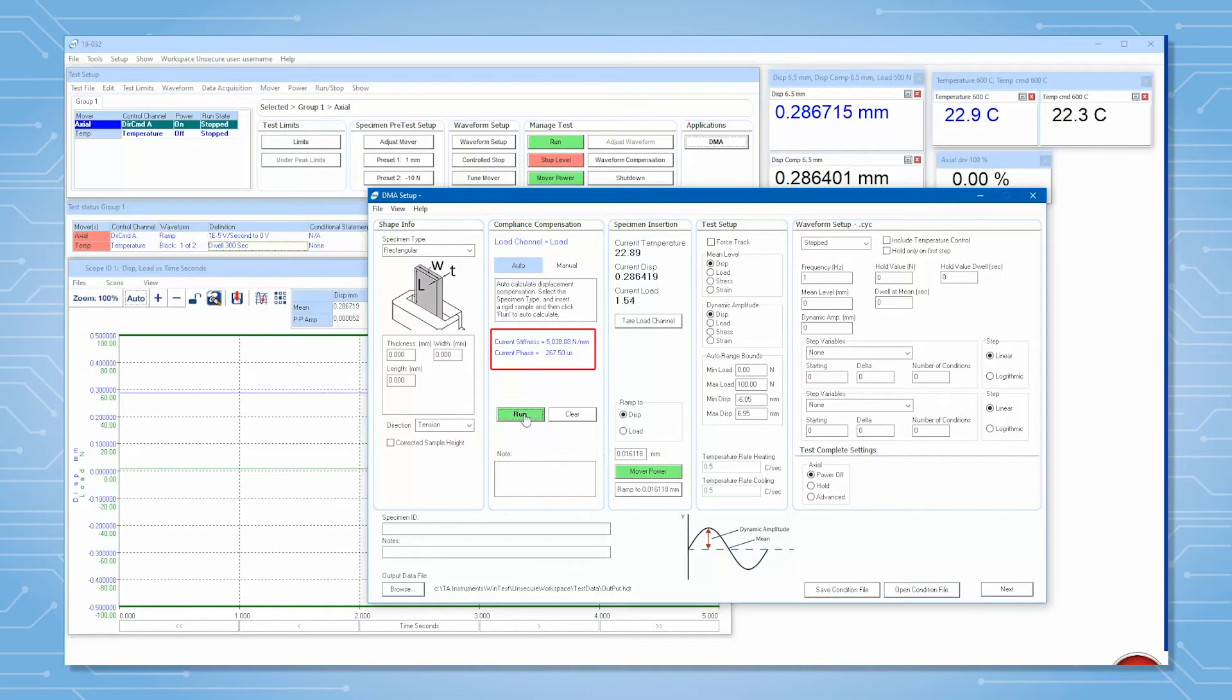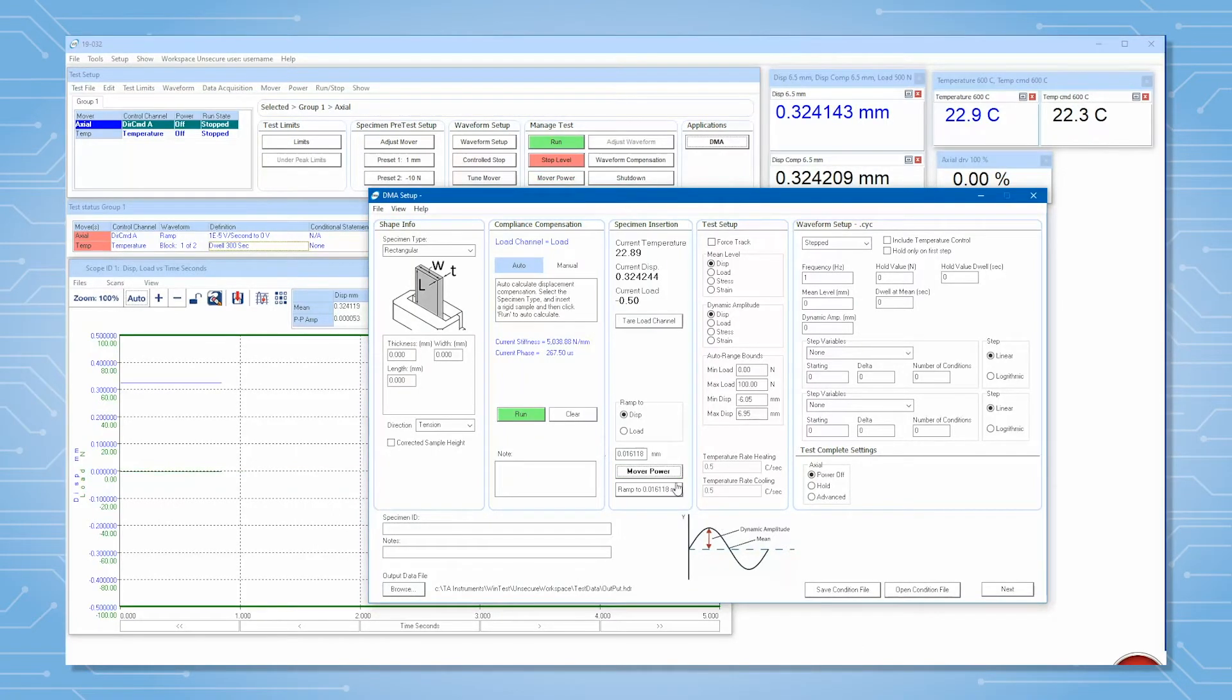For more information on this feature, you can watch the compliance compensation tech tip linked below. A third step is setting the corrected sample height. This feature is only used when testing in tension or compression geometries. Alternatively, you can measure all sample dimensions yourself with a caliper.